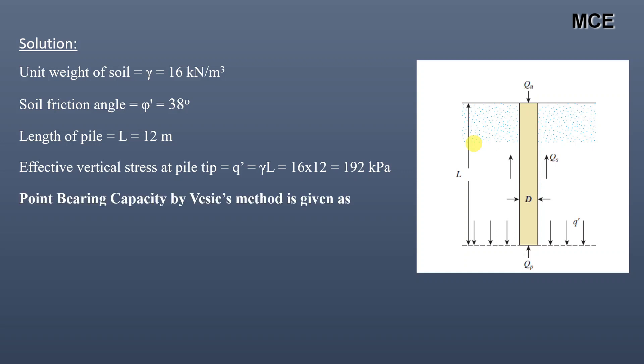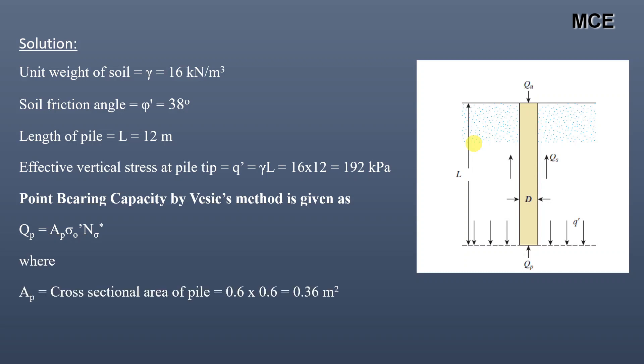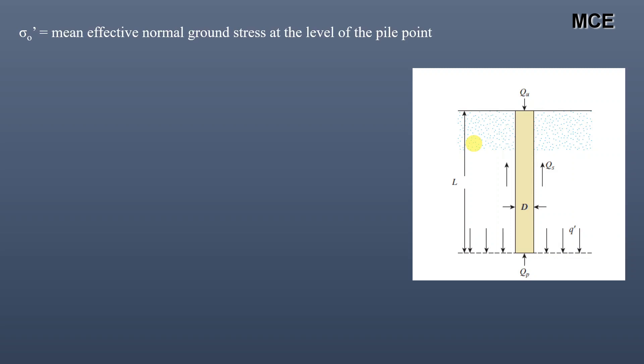The point bearing capacity by the Vesic method is given as Q_op = A_p × σ' × N_σ, where A_p is the cross-sectional area of the pile, equal to 0.6 × 0.6 = 0.36 m².